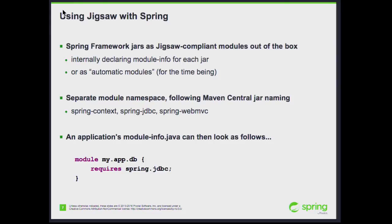The default module namespace basically follows Maven Central naming conventions but uses dots instead of dashes — so it's like spring.jdbc for the spring-jdbc jar file. You can refer to it by declaring 'requires spring.jdbc' in your module descriptor, making Jigsaw aware of that declared connection to the other module. It's actually irrelevant whether we ship module descriptors or are automatic modules — it doesn't make a difference and it's equally usable in application-level module-info files.